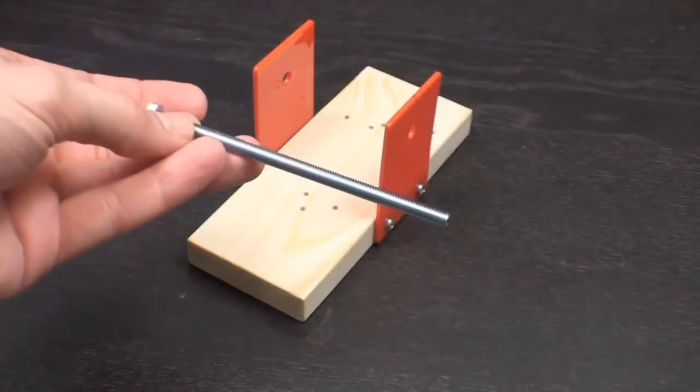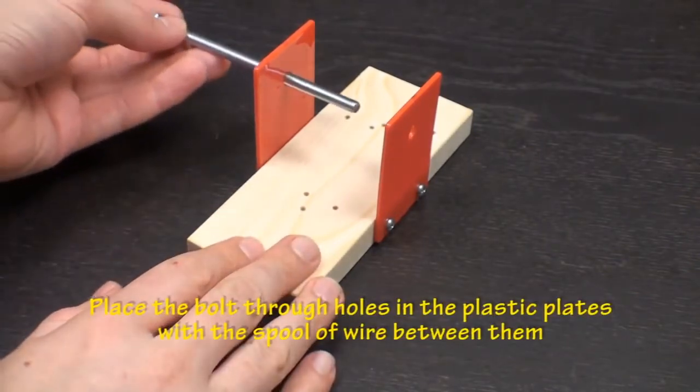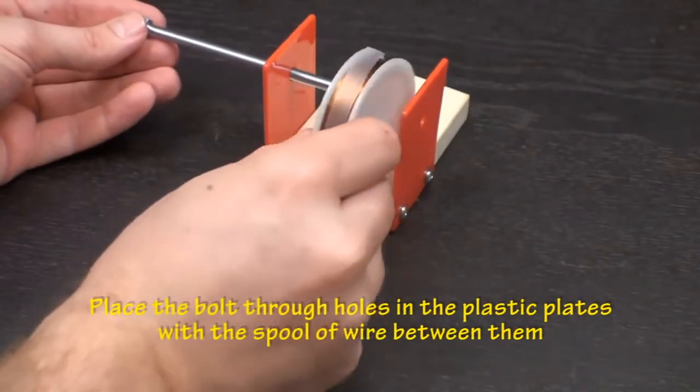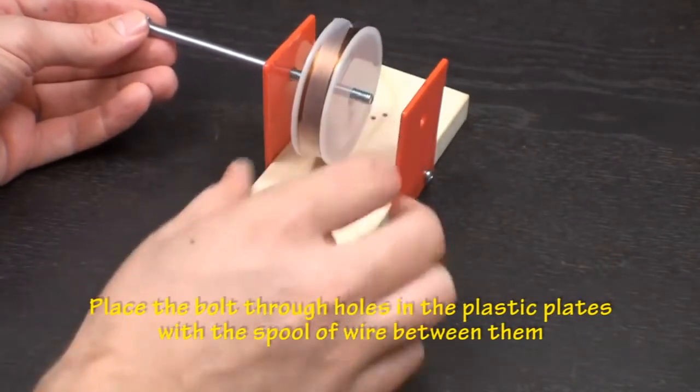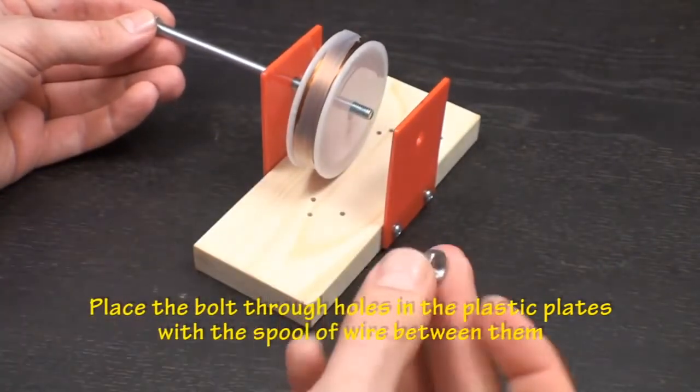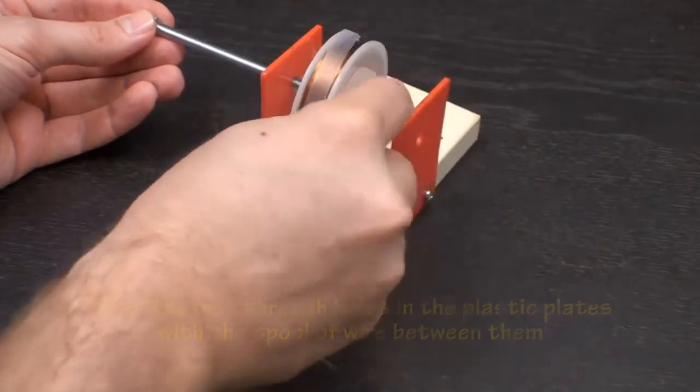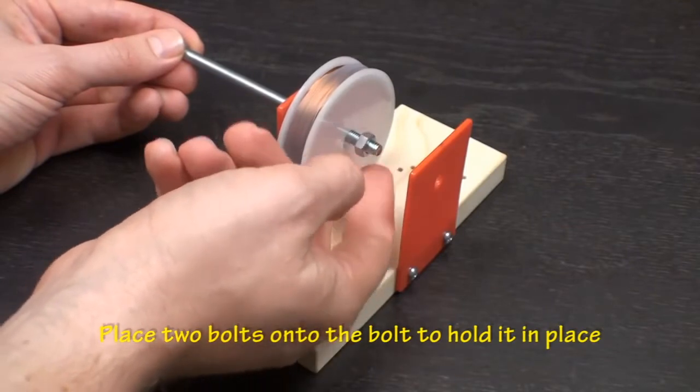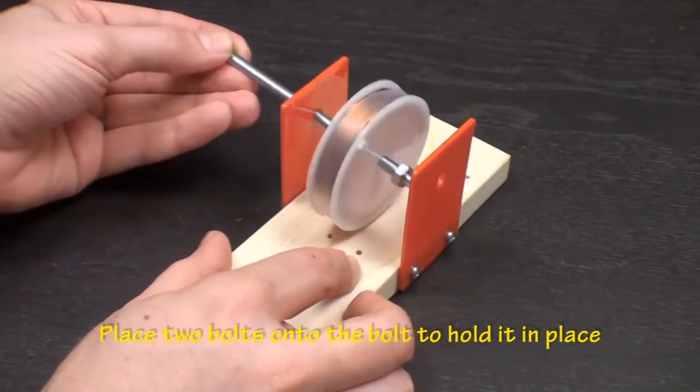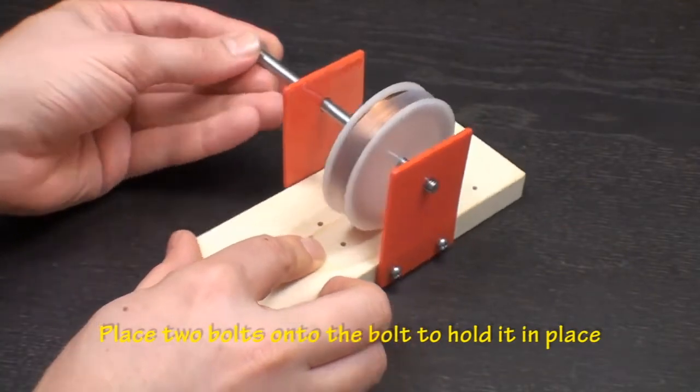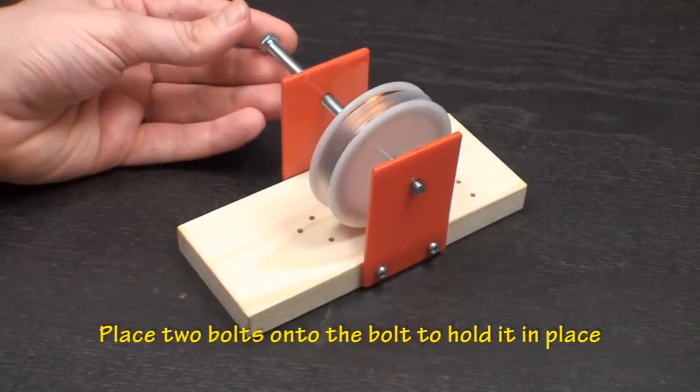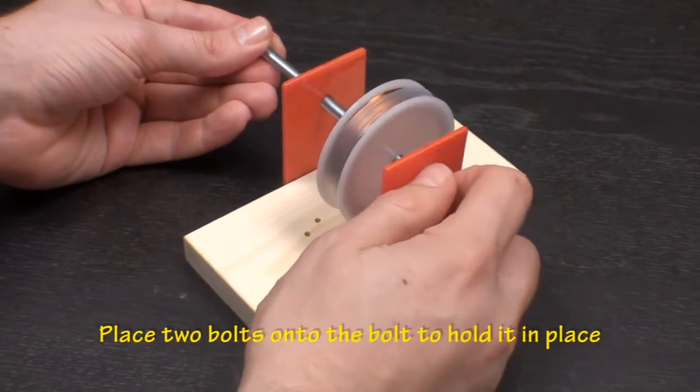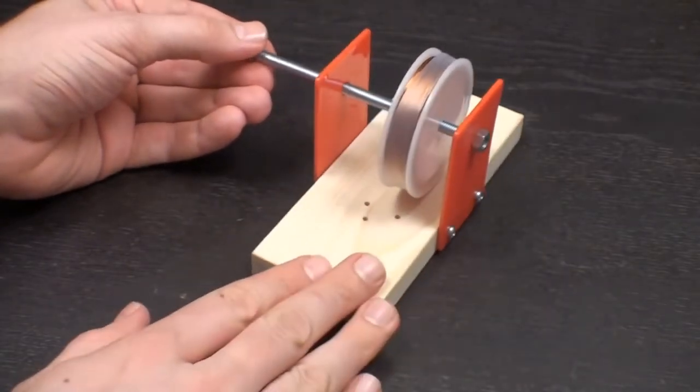Next, take the bolt and place it through one of the holes in the plastic plates. Take the spool of magnet wire and place it on the bolt. Now take a nut and screw it onto the bolt. Then place the bolt through the hole in the other plastic plate. Screw another nut onto the outside of the bolt. This will help keep the bolt from falling out.